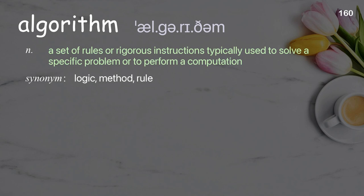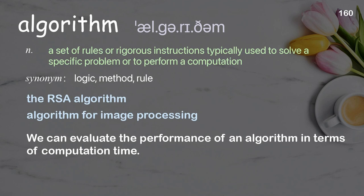Algorithm: a set of rules or rigorous instructions typically used to solve a specific problem or to perform a computation. Examples: the RSA algorithm, algorithm for image processing. We can evaluate the performance of an algorithm in terms of computation time.